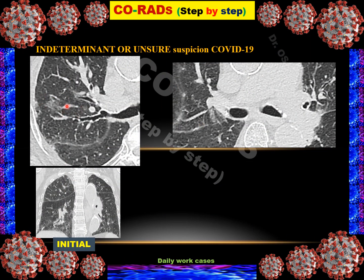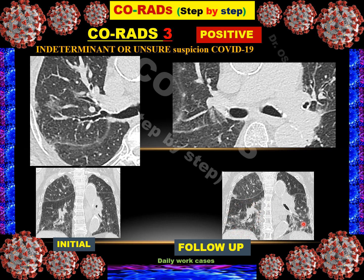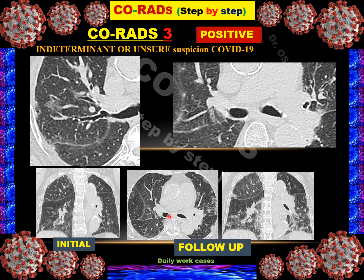Case 9: Multifocal areas of ground glass opacity distributed at perihilar locations, with no abnormality noted at the fissure or pleural surface on initial exam — classified as CO-RADS 3, meaning indeterminate. However, RT-PCR was positive. Follow-up HRCT showed deterioration with progressive ground glass opacity at the pleural surface bilaterally, basal consolidations, and confirmed COVID-19 positive disease.